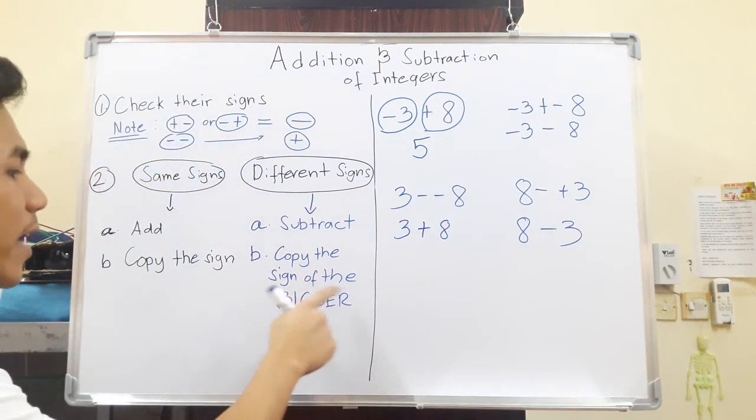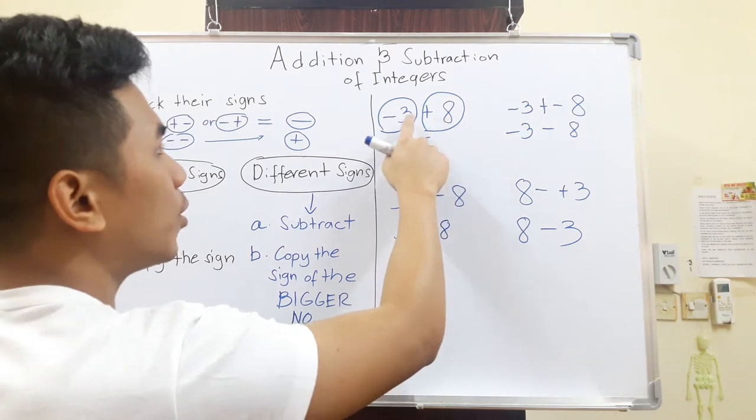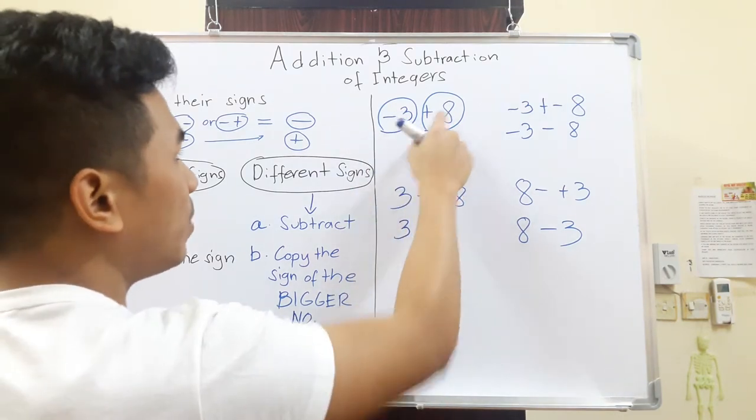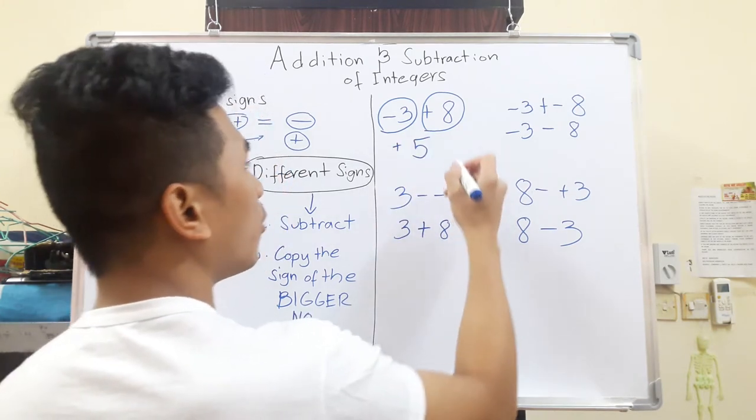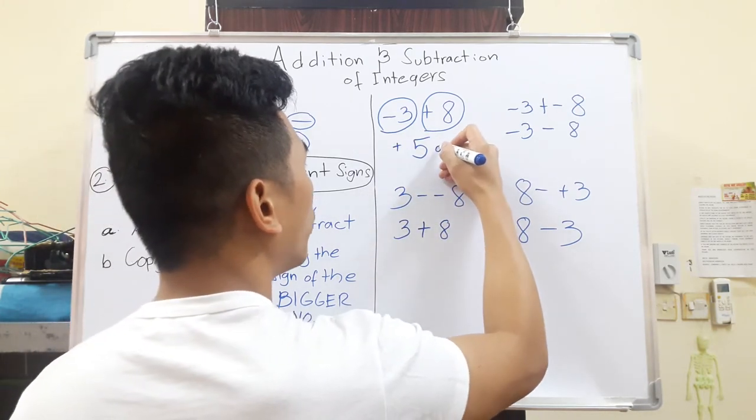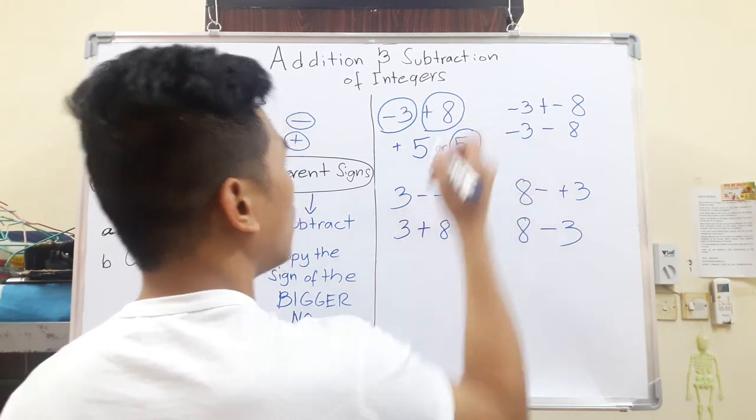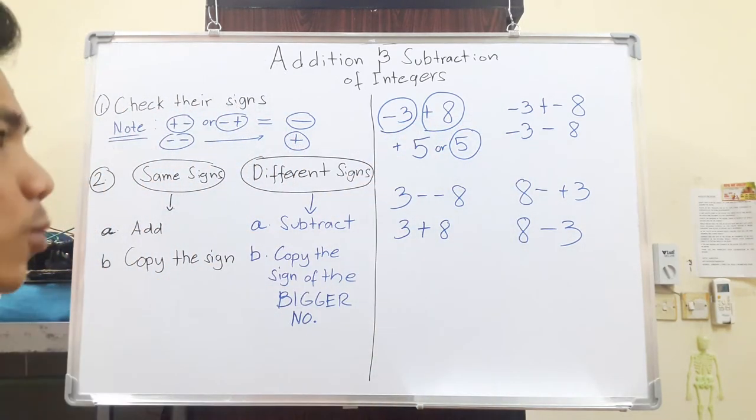Next, copy the sign of the bigger number. Now which one is bigger, the 8 or 3? Since 8 is bigger, 5 is positive. We can write positive 5 or just 5. No need to write the positive sign. And that is how you do the first question.